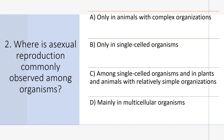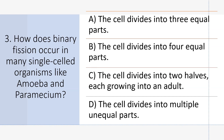Where is asexual reproduction commonly observed among organisms? Answer C: Among single-celled organisms and in plants and animals with relatively simple organizations.